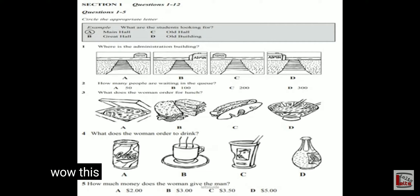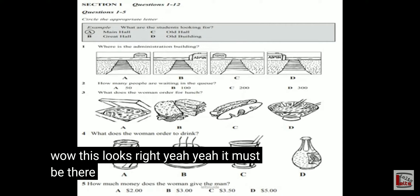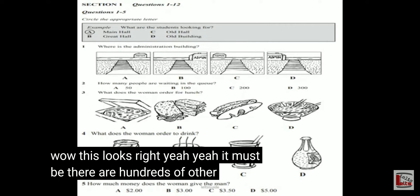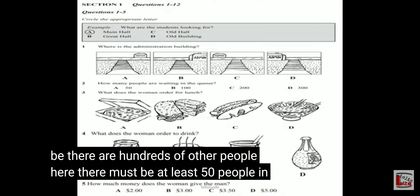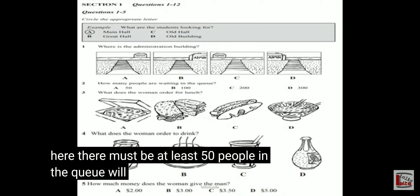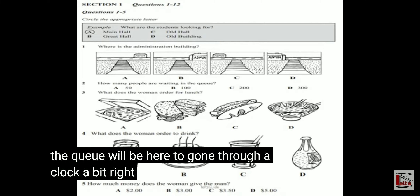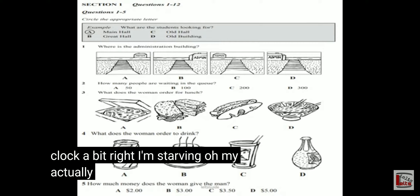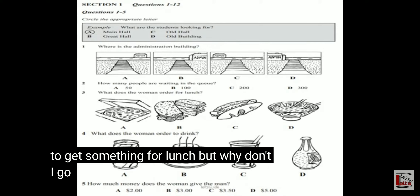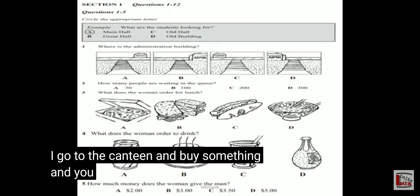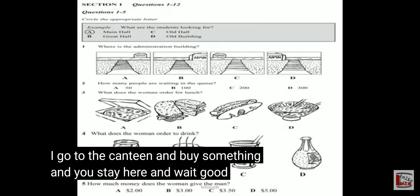Ah, this looks right. Yeah, it must be. Look, there are hundreds of other people here. There must be at least fifty people in the queue. We'll be here till gone two o'clock at this rate. Yeah, well, I'm starving. So am I. Actually, I was on my way to the canteen to get something for lunch. Why don't I go to the canteen and buy something, and you stay here and wait? Good idea.